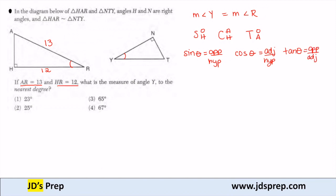Looking at that triangle, for angle R, 12 is adjacent to that angle. 13, which is opposite of our right angle, is our hypotenuse. So the trig function that we want to use with adjacent and hypotenuse is cosine.